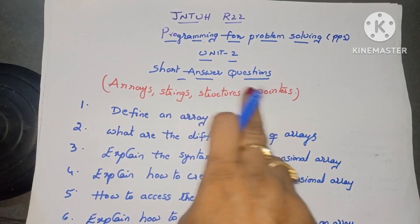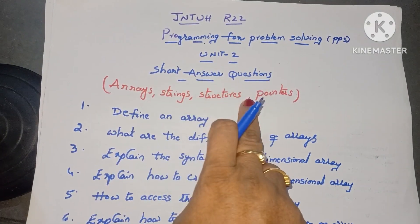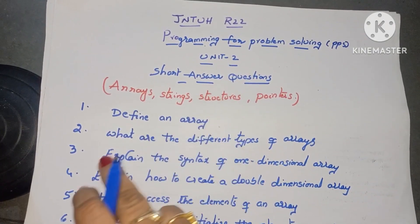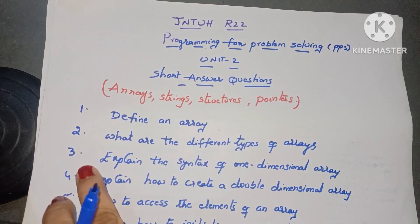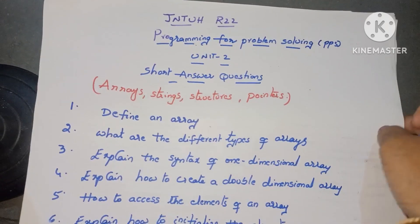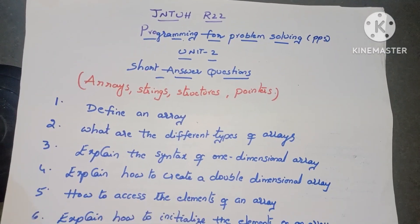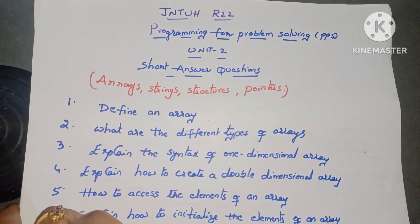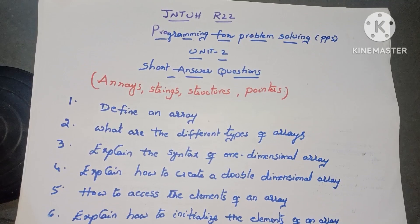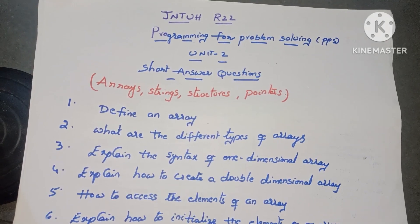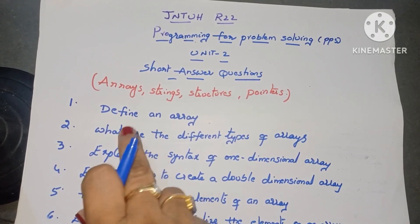In unit 2 the key concepts are arrays, strings, structures, and pointers — there are 4 different topics in unit 2. Now we will go through the important short answer questions.